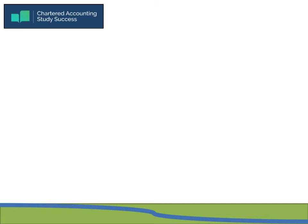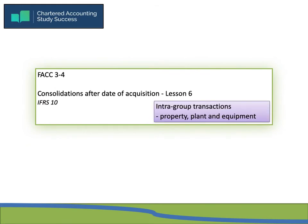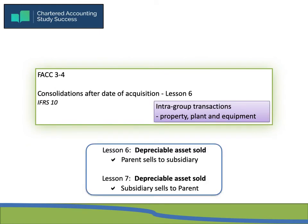Good day and welcome to this presentation. We are going to have a look at intergroup transactions, specifically dealing with property, plant and equipment. In lesson six we're going to look at when depreciable assets are sold, specifically when the parent sells to the subsidiary. In lesson seven we will look at when the subsidiary sells to the parent.